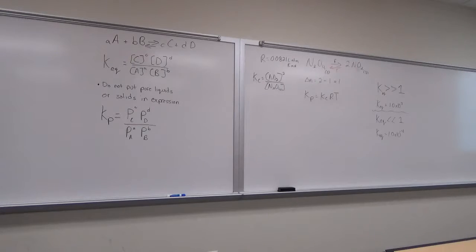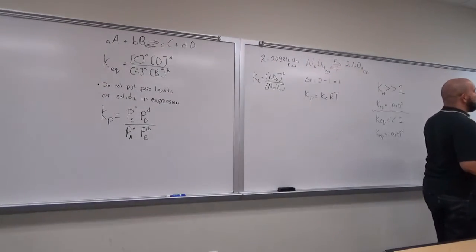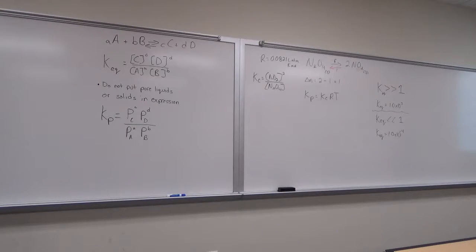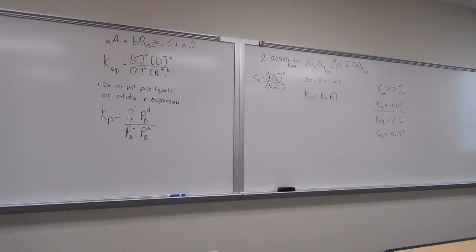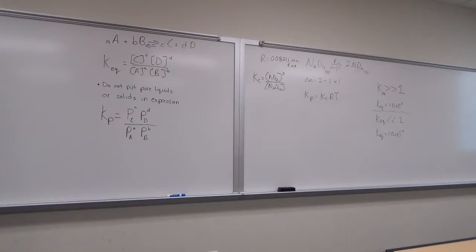They show two different equilibrium constants at the same temperature, and if you do the math, you'll see they are the inverse of one another. If I ask what species dominates at equilibrium, both values give you the same answer. Based on this temperature and reaction, N₂O₄ would be expected to dominate as the more predominant species.